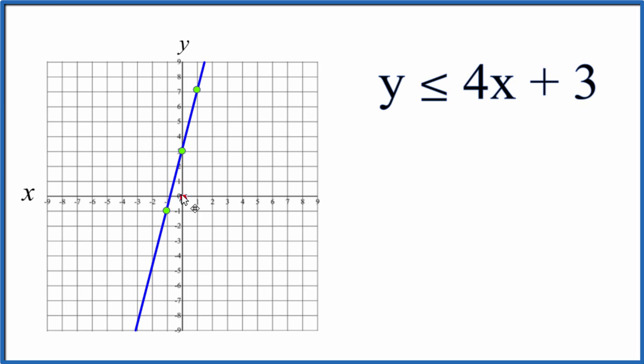So let's put a point at 0, 0 right here at the origin. Then we could say y, that's 0 right there. That should be less than or equal to 4 times x. x is 0 plus 3. So 0 is less than or equal to 4 times 0, 0, 0 plus 3. That's right. 0 is less than or equal to 3. So we know that we're doing this correctly.